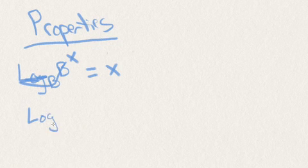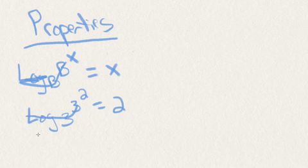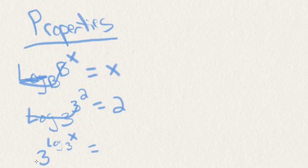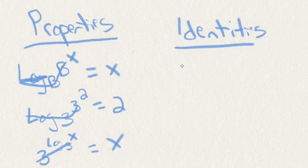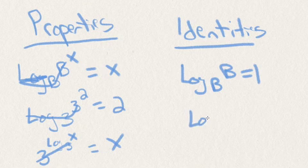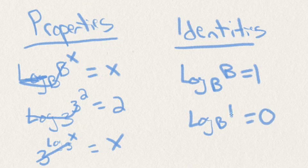So if we had log base 3 of 3 squared, the log and the 3s will cancel out and leave us with a 2. The same thing happens when we have a base with a log with the same base as an exponent — the logs and the bases cancel out and we're left with an x. A couple of identities: the log with base b of itself is equal to 1, and the log of anything of 1 is equal to 0.